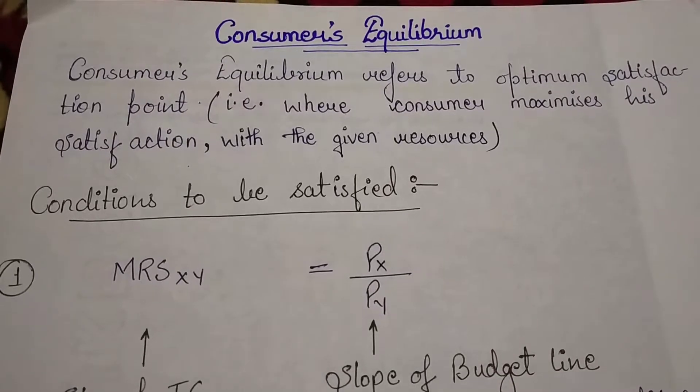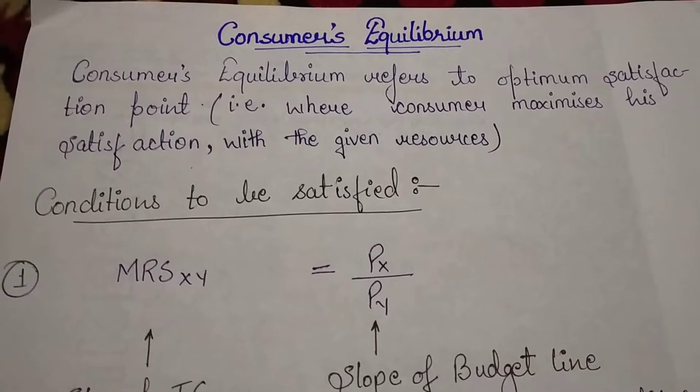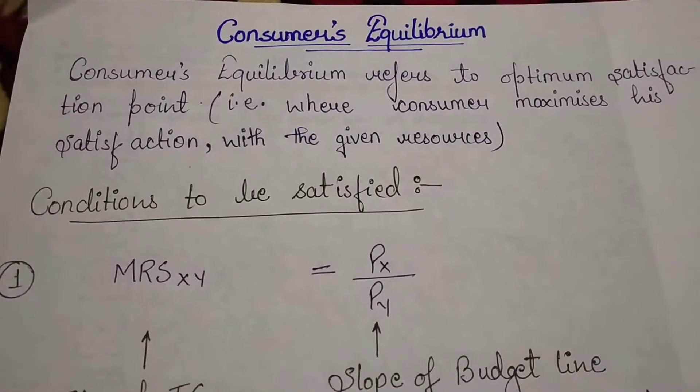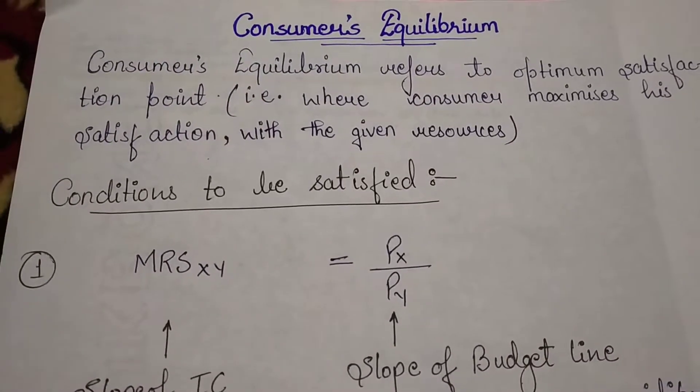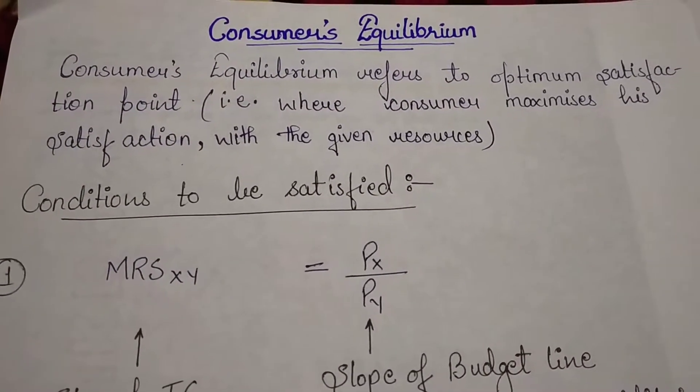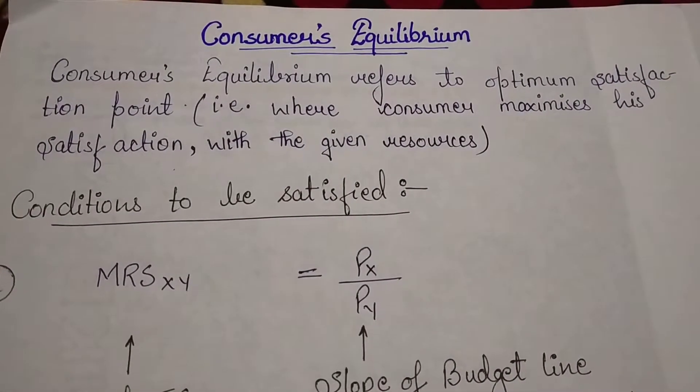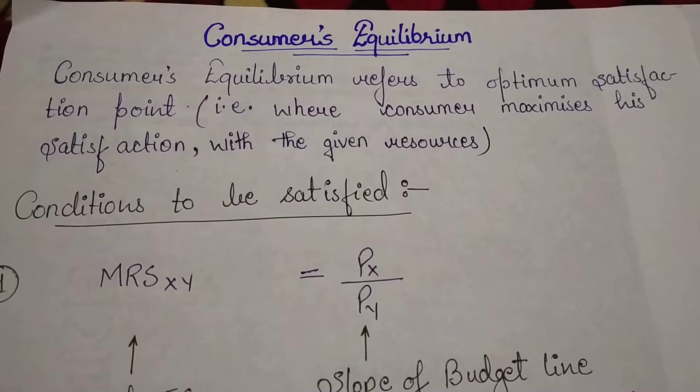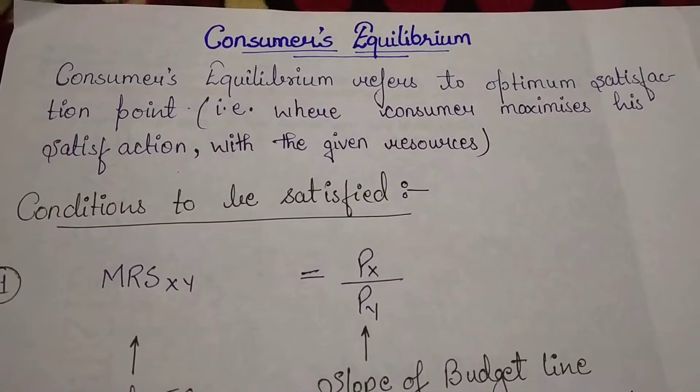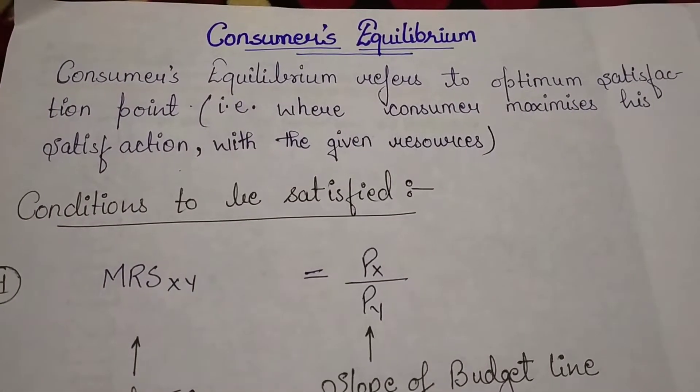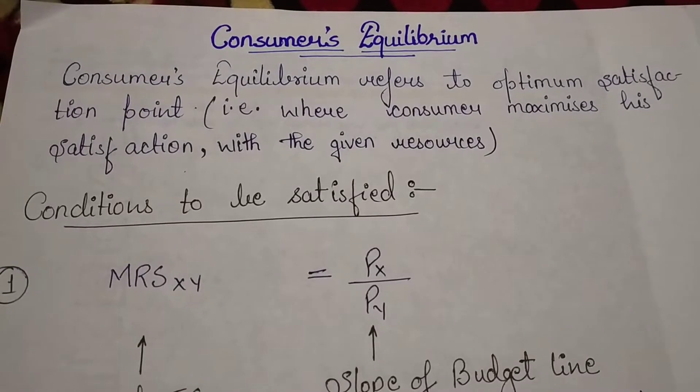How to attain consumer equilibrium through IC approach. So now we will start consumer equilibrium. What is consumer equilibrium? Consumer equilibrium is the condition where the money spent on any commodity gives equal satisfaction.